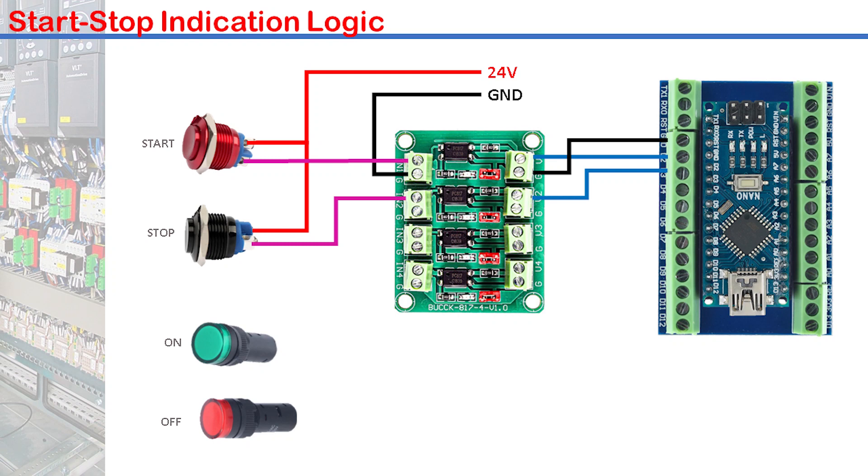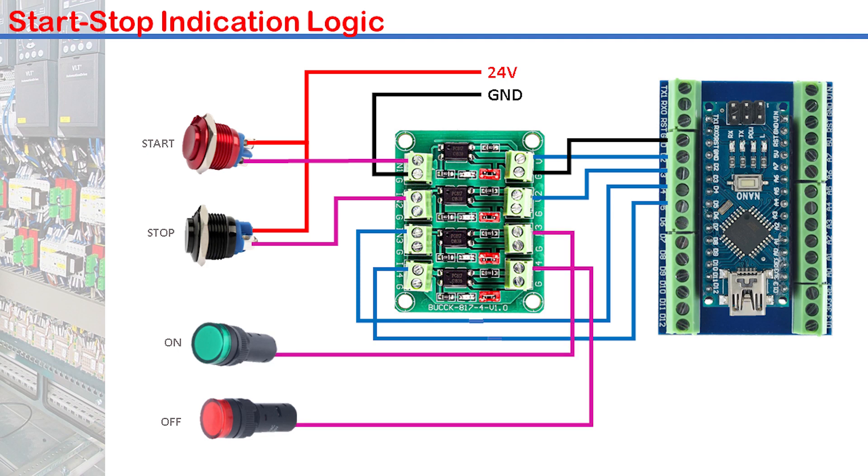The indicators are however connected to the module in reverse since they are output devices. First, D4 and D5 are connected to IN3 and IN4 of the module. Then V3 and V4 of the module are connected to a terminal of the green and the red indicators respectively. And finally, the other terminals to the positive of the 24V power supply.